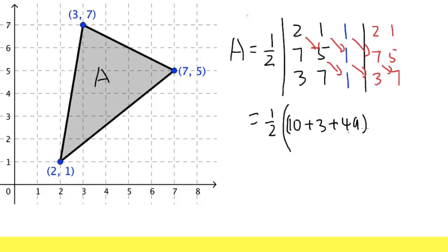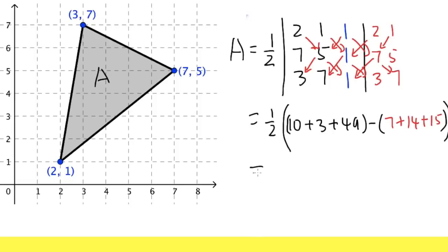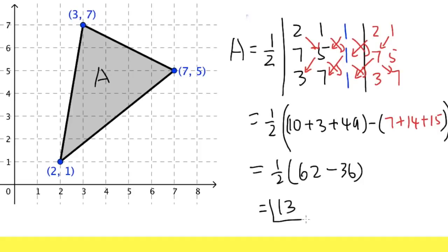Then you subtract and go the other way for the backward diagonals: one times seven times one is 7, plus two times one times seven is 14, plus one times five times three is 15. So the computation gives us one-half times — the forward sum is 62 minus the backward sum of 36. Work that out: 13. Of course, we know it's 13.